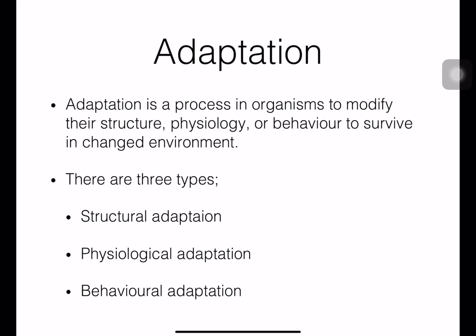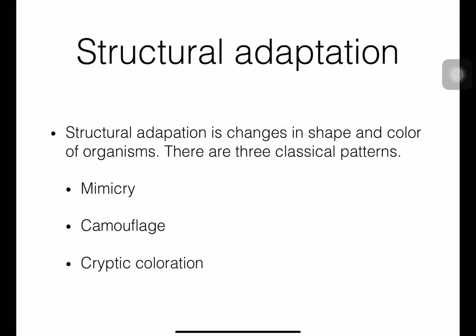Organisms in nature also have adaptations — modifications in their structures such as shape or colors, physiology (how the body works), or behavior (how they act). These adjustments increase their rate of survival. We classify adaptations into three categories: structural adaptation, physiological adaptation, and behavioral adaptation. Structural adaptation shows changes in shape and colors.